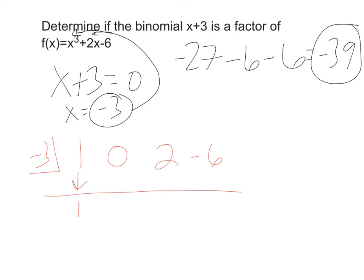Drop down to 1. I get negative 3 when I multiply negative 3 times 1. 0 plus negative 3 is negative 3. Multiply negative 3 and negative 3 to get 9. Then I get 11. Negative 3 times 11 is negative 33. Add those together, I get negative 39.